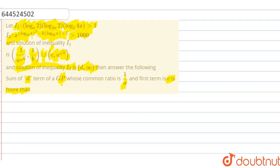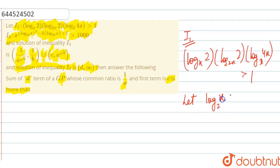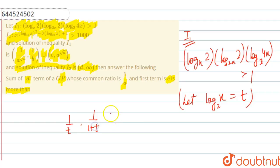Let us start with I1. In I1 we have log₂x · log₂(2x) · log₂(4x) greater than 1. Let us consider log₂x = t so that we can simplify easily. It will become (1/t) · (1/(1+t)) · (2+t) greater than 1.